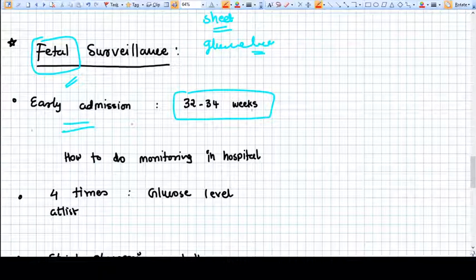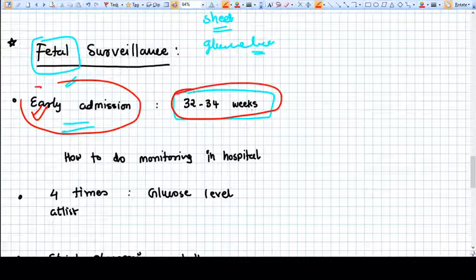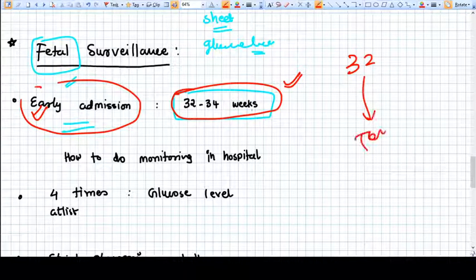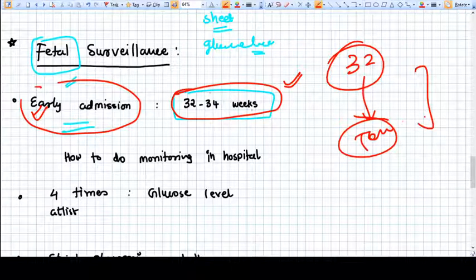The obstetric management of GDM is we advise early admission at around 30 to 34 weeks because this period from 32 weeks up to term is the very high-risk period for diabetes mellitus. The risk of intrauterine death and other complications is very high in this period, so we advise admission.